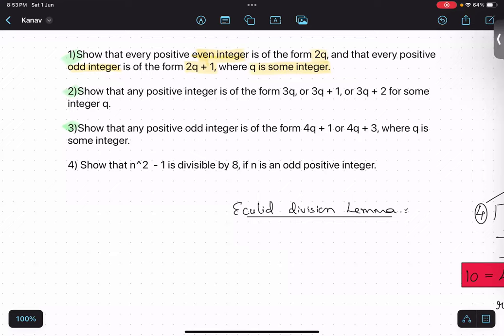So, similarly in question number 2, show that any positive integer is of the form 3q, 3q plus 1, or 3q plus 2 for some integer q.